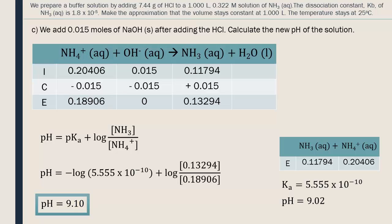For the quantity of base that was added, the pH only went from 9.02 to 9.10. This demonstrates the usefulness of buffer solutions. They keep the pH fairly stable.